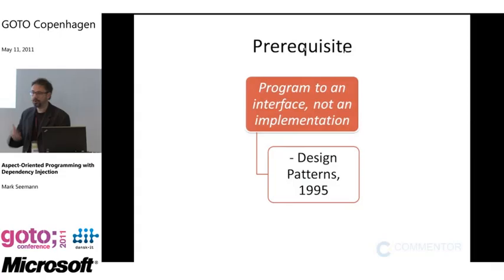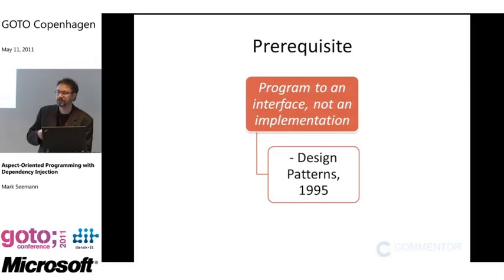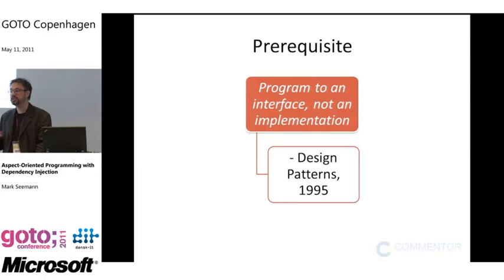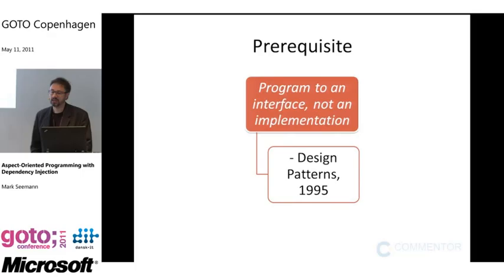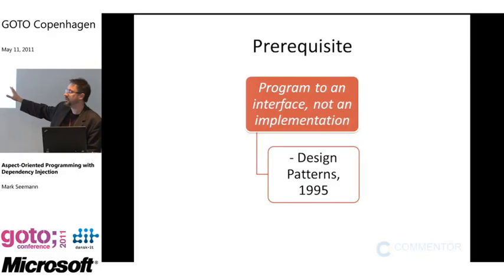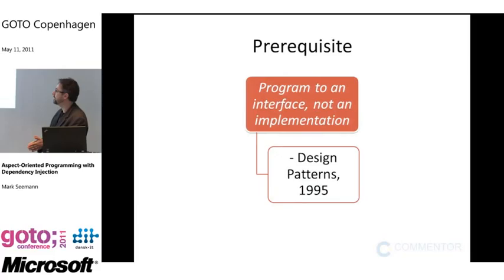There's a prerequisite for all of this. You may have heard of PostSharp, which is an AOP framework for .NET — but that's not what I'll talk about today. Here we're talking about loosely coupled code. Dependency injection is just a thing you use to enable loosely coupled code — essentially the idea of programming to an interface, not an implementation. This quote is from the book 'Design Patterns' from 1995, page 18 — it's not new at all.